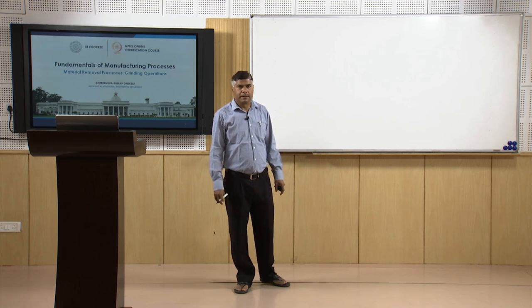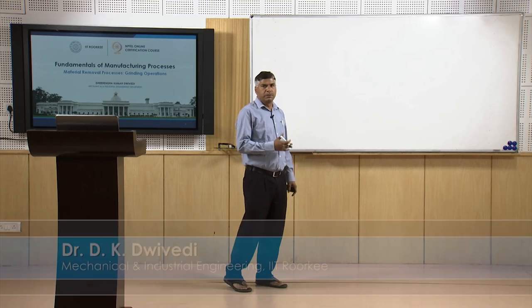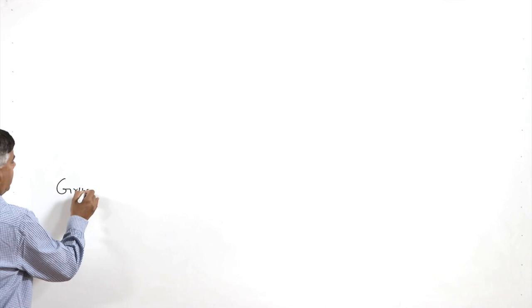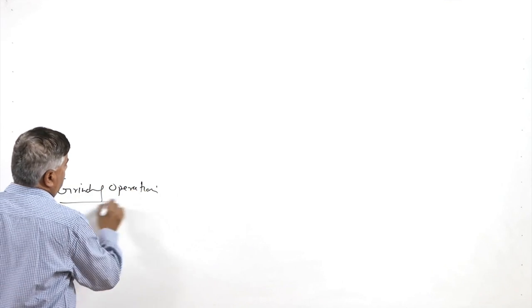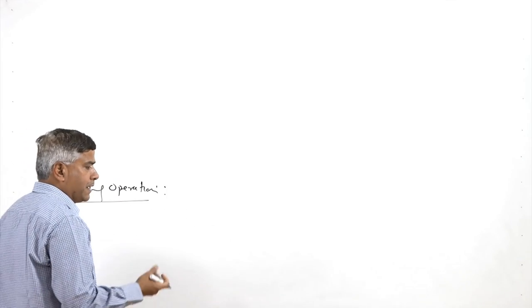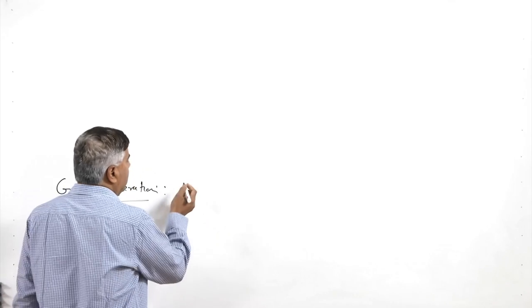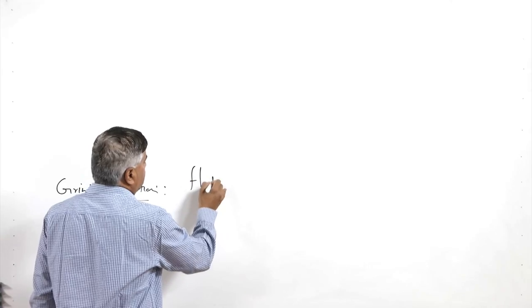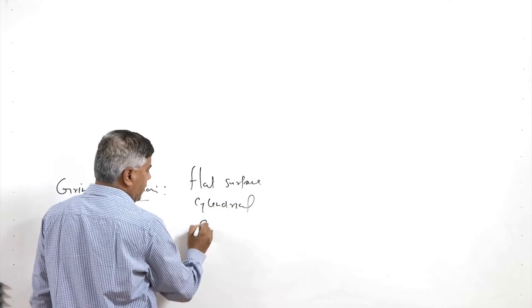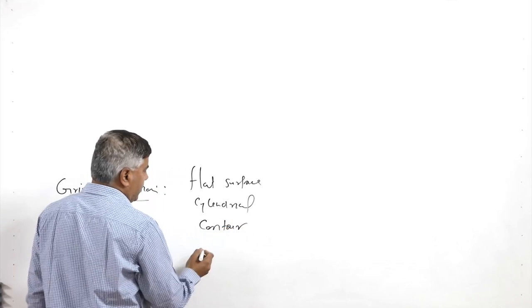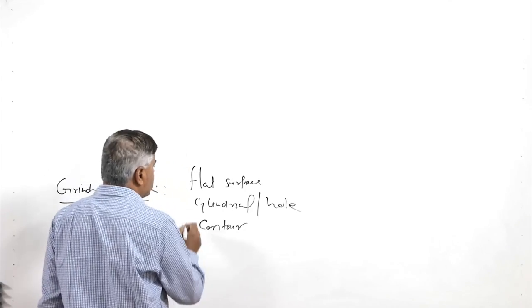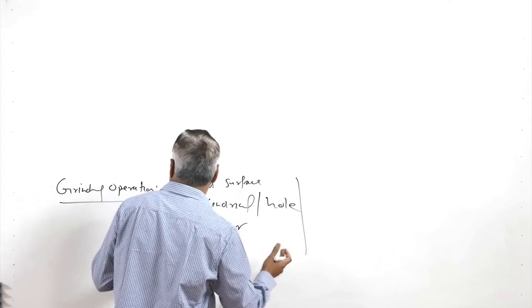Hello, I welcome you all in this presentation related to the subject fundamentals of the manufacturing processes and we are talking about the grinding process. The last few lectures we have talked about the fundamentals related to grinding and today we will see the grinding operations or grinding processes. Grinding is used for giving the desired finish as well as control over the dimensions so that accurate size products can be made. It is used for smoothening or finishing of flat surfaces, cylindrical shape components like contours in the form of threads, holes, gears, and various such geometries can be processed by the grinding process.